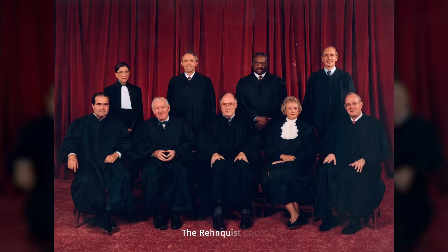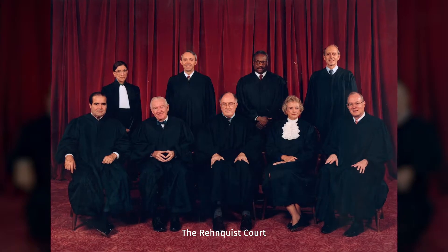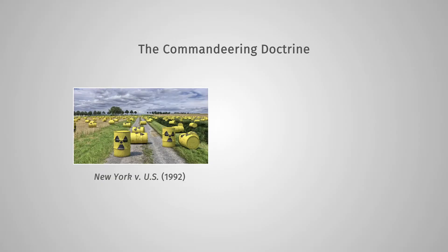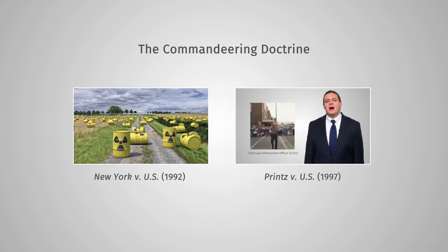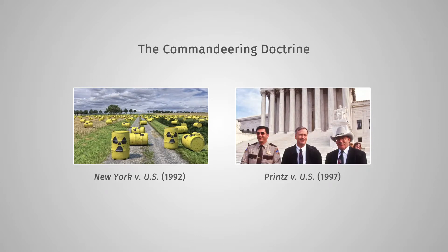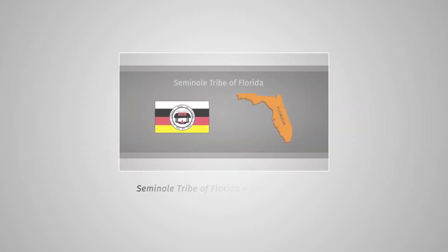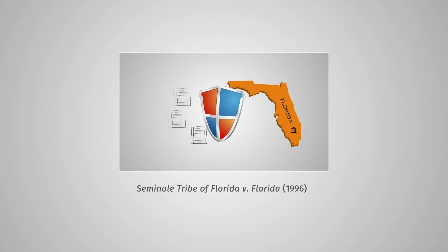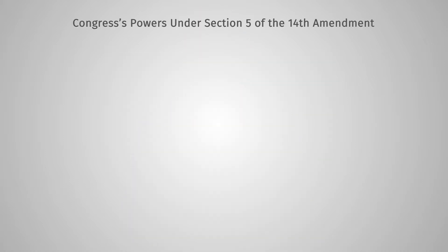Part Three will focus on important federalism cases decided by the Rehnquist Court. New York versus US, 1992, and Printz versus US, 1997, developed the Commandeering Doctrine. Seminole Tribe of Florida versus Florida analyzed the 11th Amendment and state sovereign immunity. Finally, the court considered Congress's powers under Section 5 of the 14th Amendment in four cases.